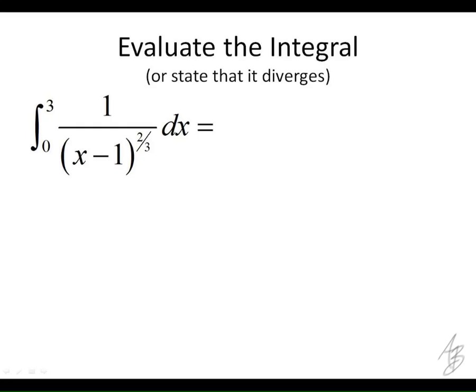So when x equals 1, we're going to end up with a vertical asymptote here because we're dividing by 0. So we're going to have a problem at x equals 1, and if you notice, that problem is between 0 and 3.